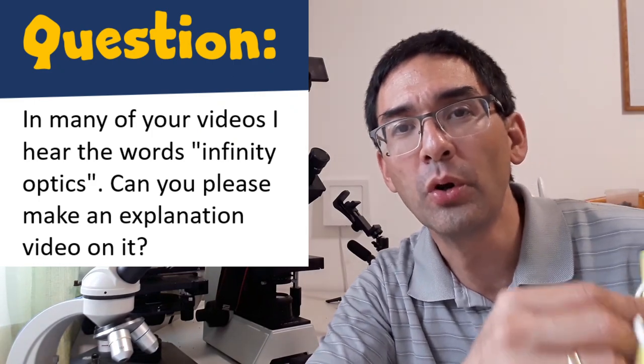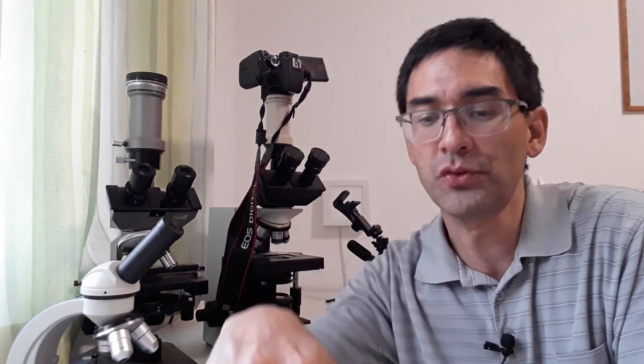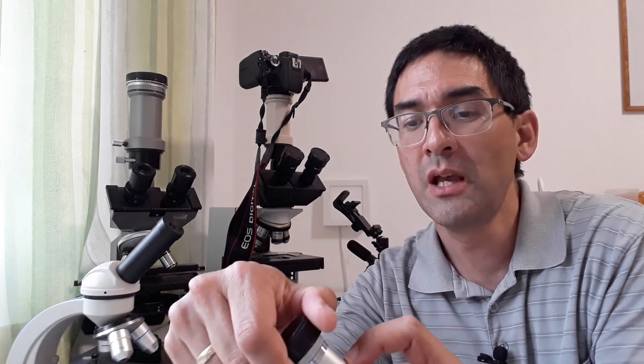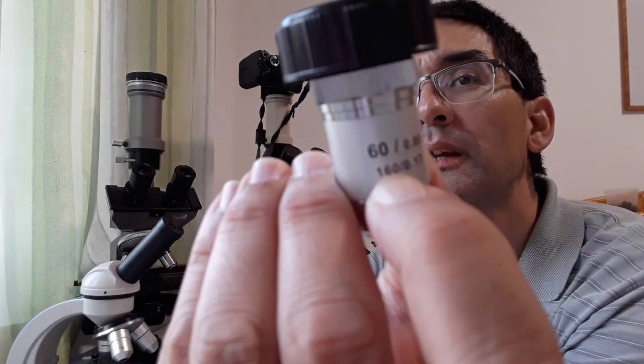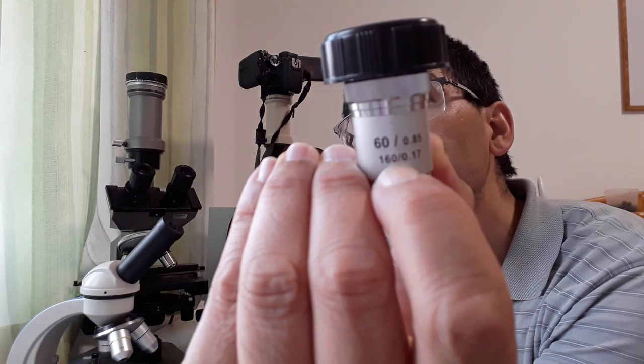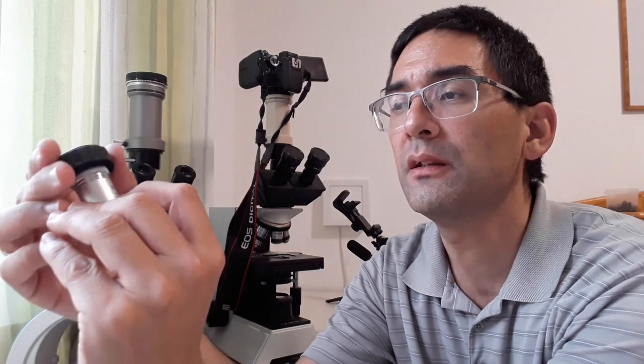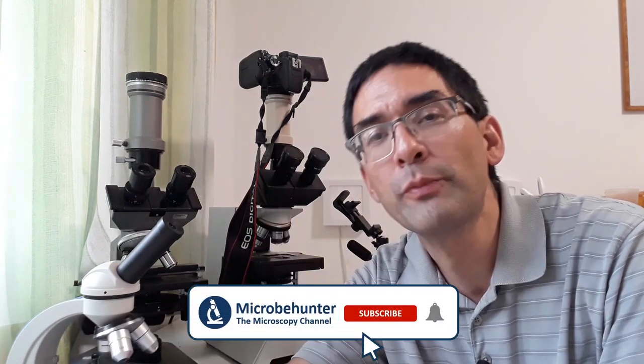Most low-cost entry-level microscopes have the so-called 160 millimeter standard and you know that you have a microscope with that standard because on your microscope objectives, there is a small 160 written on there. It's a little bit out of focus now but if you have the 160 written on it then you know it's basically the DIN 160 millimeter standard. A very common standard in low-cost microscopes, also medium-range microscopes.